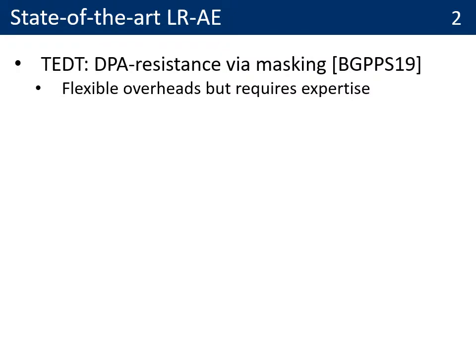Now, if you look at the state of the art, the first question is how to implement the key generation function and the tag generation function. One solution is to rely on masking, and this is for example what was proposed by Bertie and co-authors in 2019 with TEDT. The interest of this solution is that it has flexible overheads at the implementation level — if you don't need side-channel security, you will not pay anything. The negative point is that it requires expertise to implement masking securely.